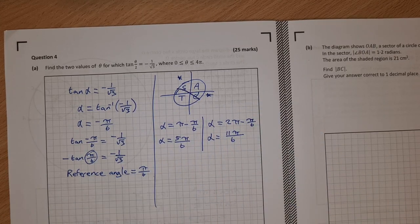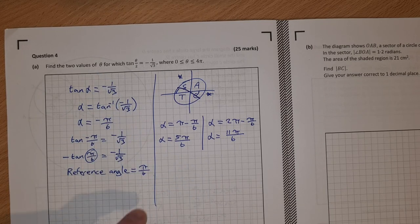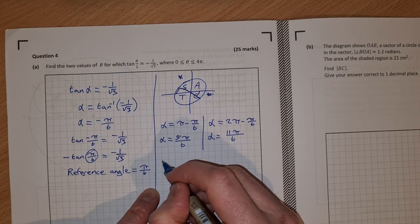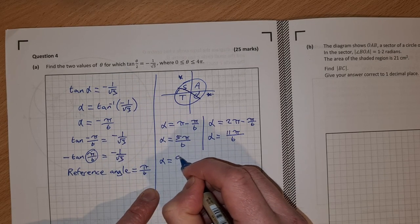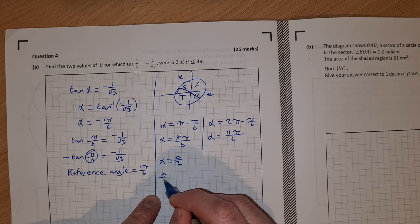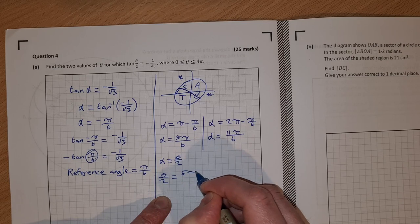Now, we're not done because we didn't want to find alpha. We wanted to find theta. I know that alpha is equal to theta over 2. So that means theta over 2 is equal to 5 pi over 6.